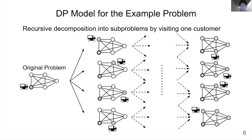This problem can be solved by DP. The idea of DP is to decompose the original problem into sub-problems. In our example, the original problem has the vehicle at the depot and all customers except the depot are unvisited. We decompose this original problem into sub-problems by visiting one of the unvisited customers. By computing the cost of these sub-problems, we can compute the cost of the original problem.